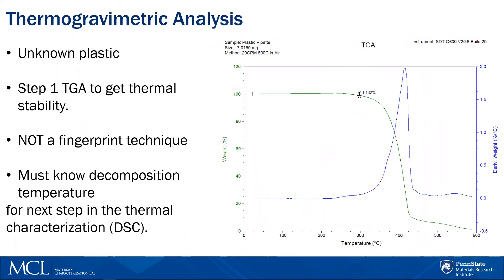Here is a practical starting example. I have an unknown plastic. Step one in thermal analysis is going to be to take a TGA. Please note that any change in the weight of the sample, the heating rate, as well as the sample morphology can change our final result that we obtain for this test.